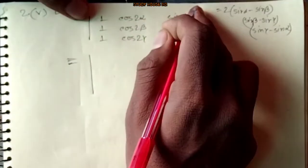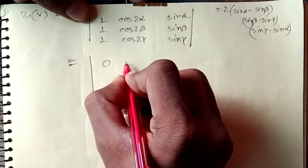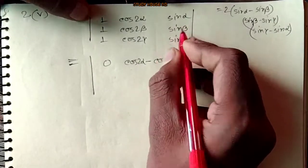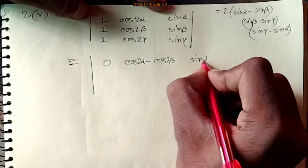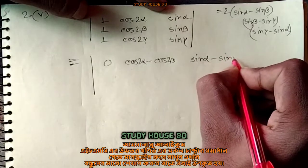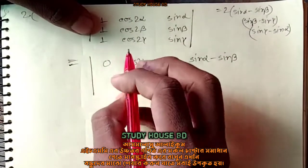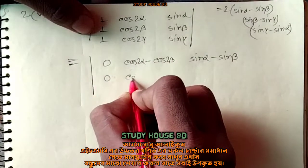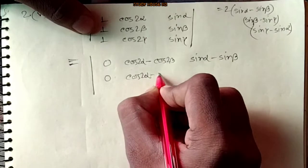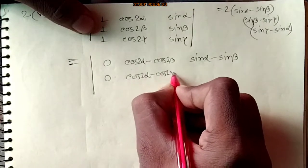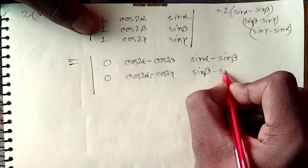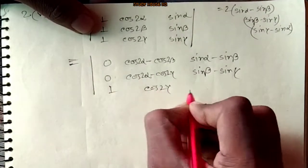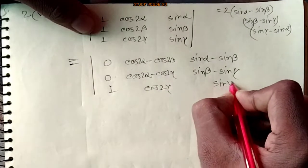So first, we are saying the determinant equals 2F, that is: 0, cos2α minus cos2β, sin α minus sin β. The same thing is: 0, cos2β minus cos2α, sin β minus sin α. So we will write cos2γ, sin γ.